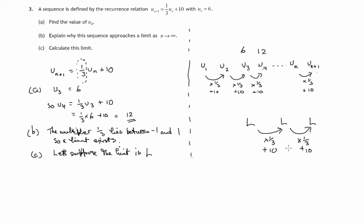So that would mean that if we take a third of this number L and add ten, we will get this number L again. So let's solve this equation. Let's multiply both sides by three. Three times a third is one. One L plus three times ten is thirty. Let's take away L from both sides. And therefore that limit is fifteen.